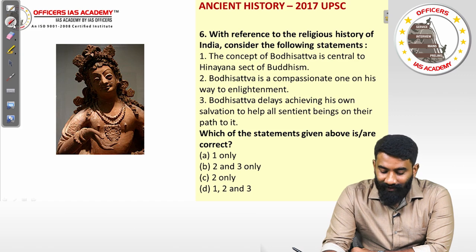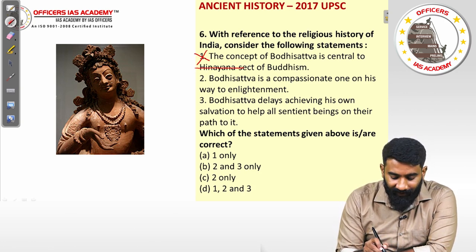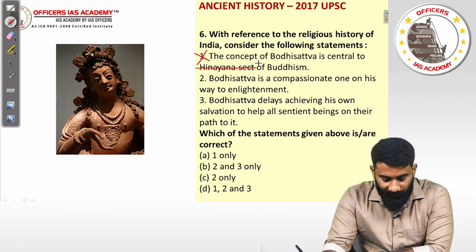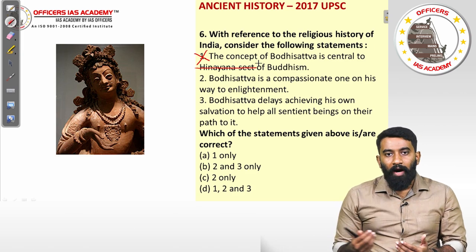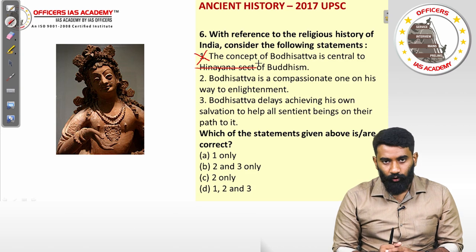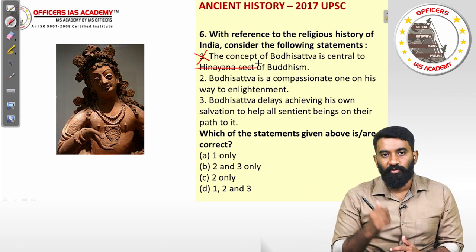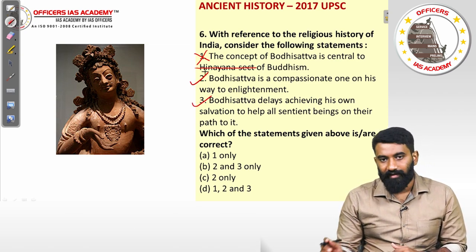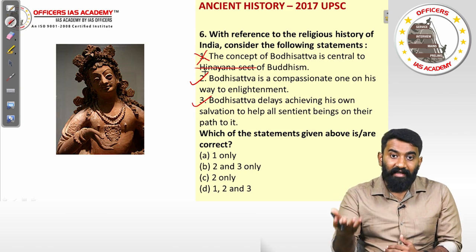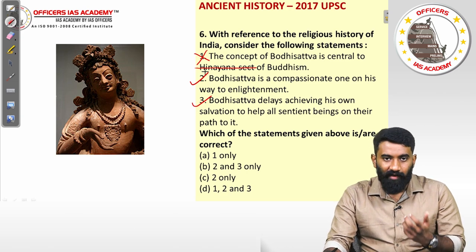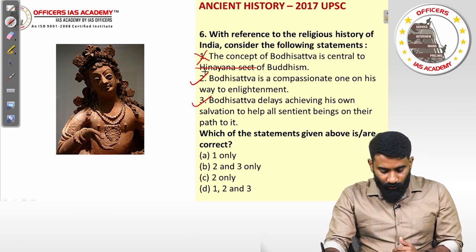With reference to the religious history of India, consider the following statements about Bodhisattvas. The concept of Bodhisattva is central to the Hinayana sect of Buddhism — that statement is incorrect; it belongs to the Mahayana sect. A Bodhisattva is a compassionate person on the path to enlightenment who delays achieving their own salvation to help all sentient beings. That second statement is correct. The Bodhisattva also helps others attain Buddhahood. Examples include Bodhidharma, Vajrapani, and Padmapani. The answer is option B: two and three only.